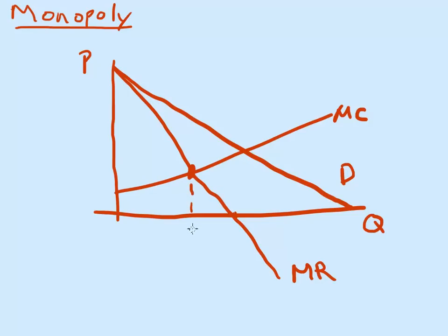So you want to produce right here where marginal revenue is equal to marginal cost. There's our quantity. Then you want to go up to the demand curve. That's our profit-maximizing price. So again, this point right here is where marginal revenue is equal to marginal cost, but don't set the price there. Set the price up at this demand curve right there, and that will give you the largest profits.